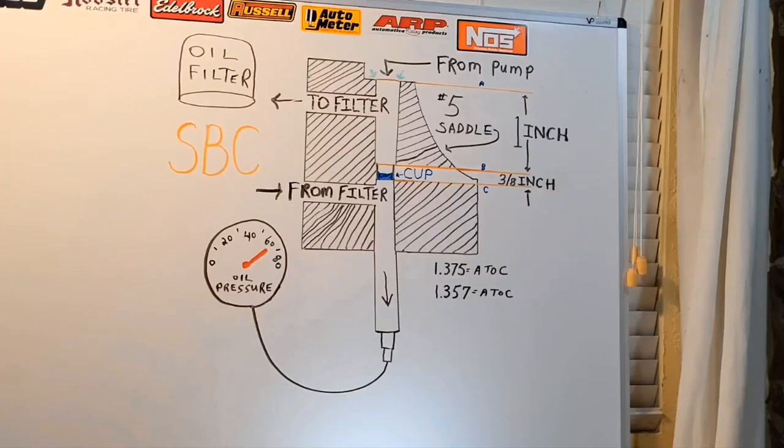I've put numerals on these orange lines - the first one's A, the second one's B, the third one is C. From line A to line C, the specification is no more than 1.375. This block, which is the Dart test block, measured 1.357. That means the bottom of the cup is 18 thou below line C and not blocking oil coming from the filter passage here.